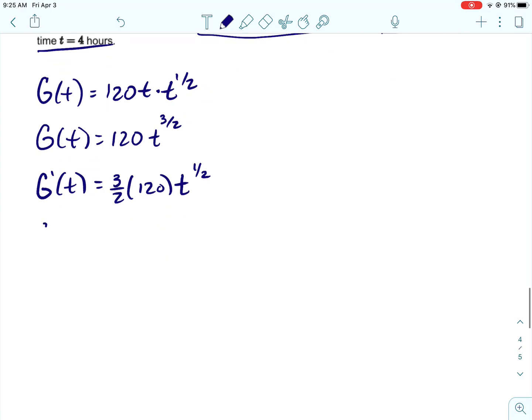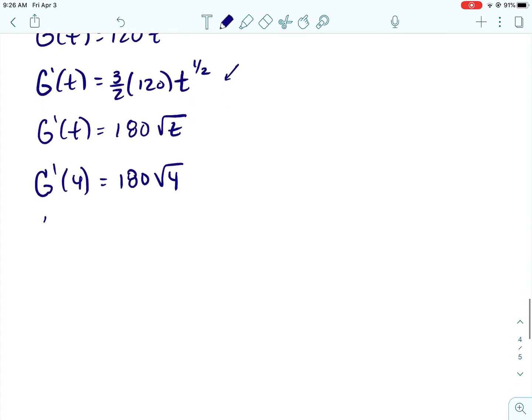Now, I feel like they're going to want to see what you're actually multiplying. I don't know for sure, but I would write that. Because you might get a point for this, even if in the next step, you mess up on that multiplication. So you do get 180. We multiply those together. t to the one half is the square root of t.